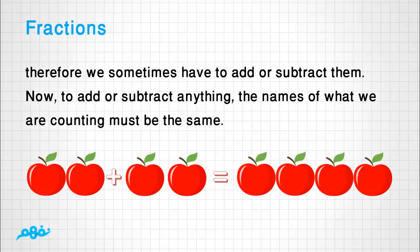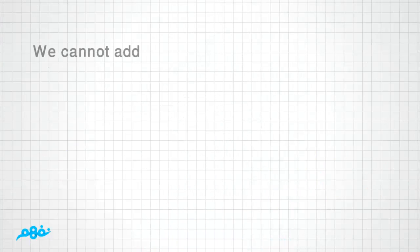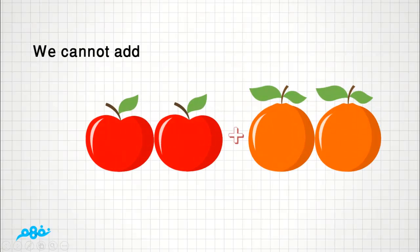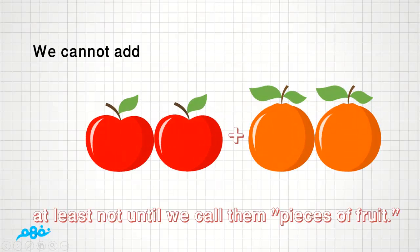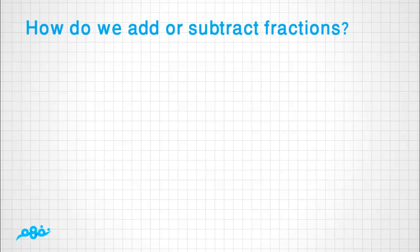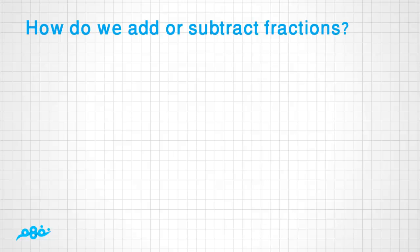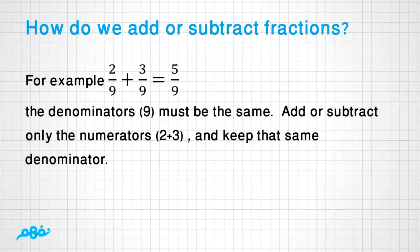We cannot add two apples plus two oranges, at least not until we call them pieces of fruit. How do we add or subtract fractions? For example, 2/9 + 3/9 = 5/9.